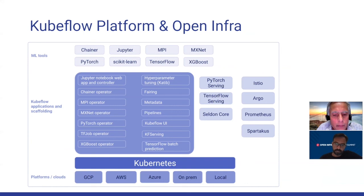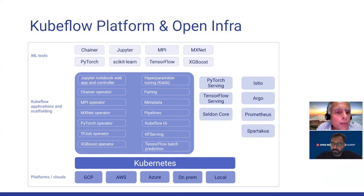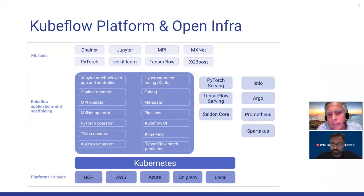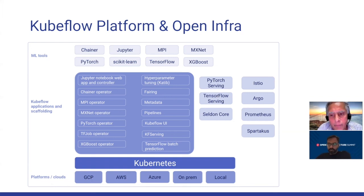The Kubeflow platform runs anywhere Kubernetes is available — on-prem, local, or cloud environments like Azure. You provide the scaffolding of required applications and ML tools, then build the pipeline using Argo or Kubeflow itself for ML flows and execute them. On the right side you have TensorFlow serving, Python serving, Istio service mesh, and Argo for pipelines, supporting fault detection and monitoring. This entire setup can be replicated in open infrastructure.